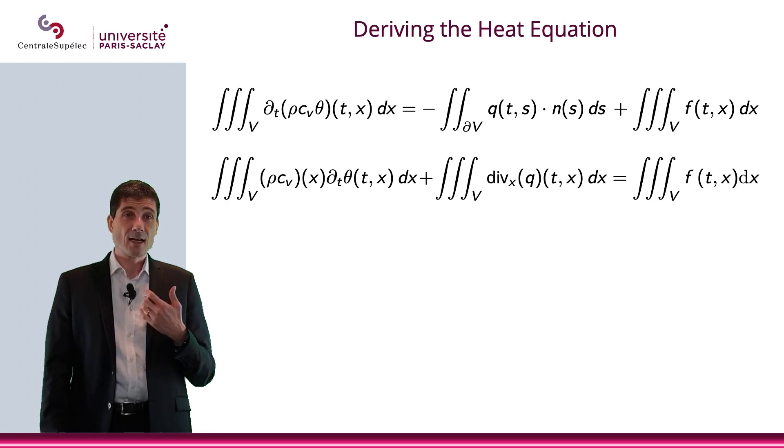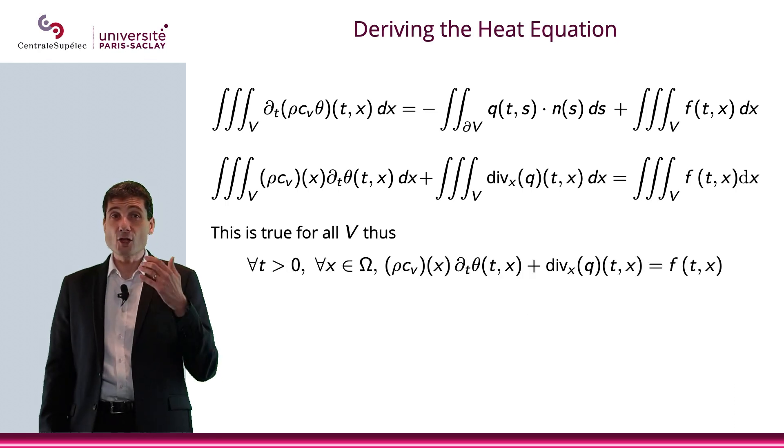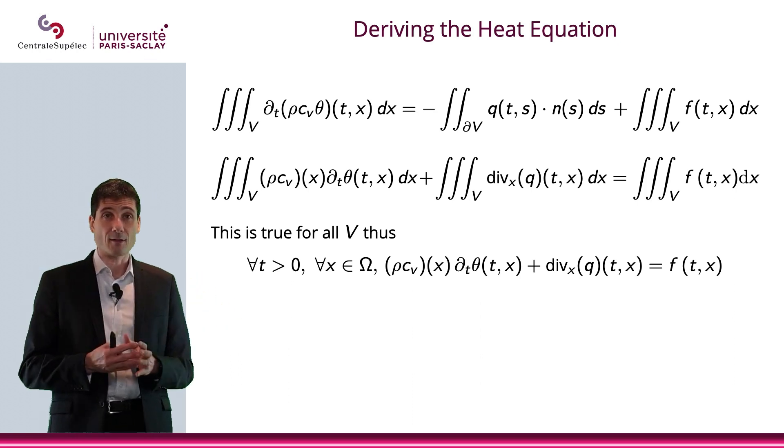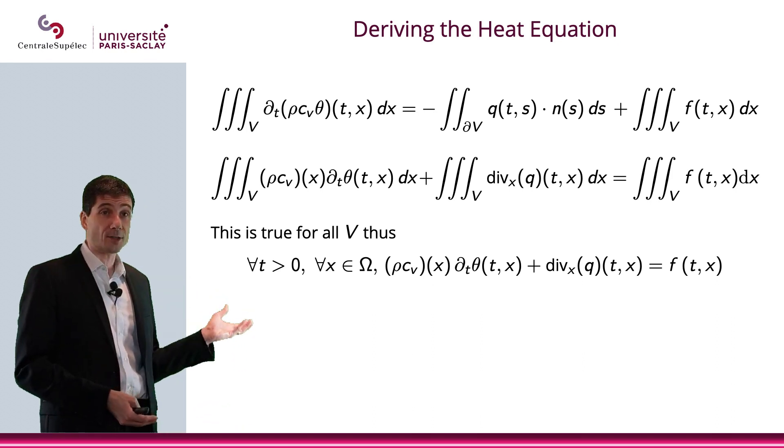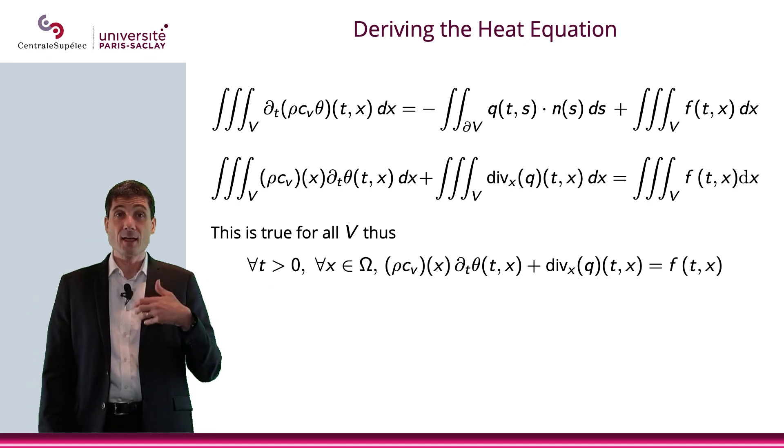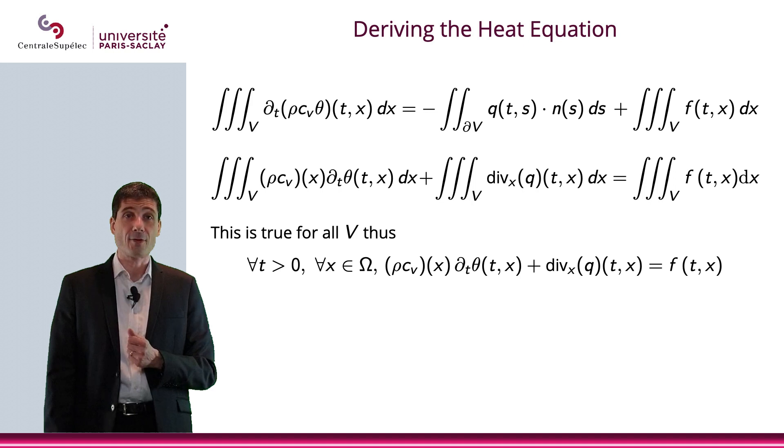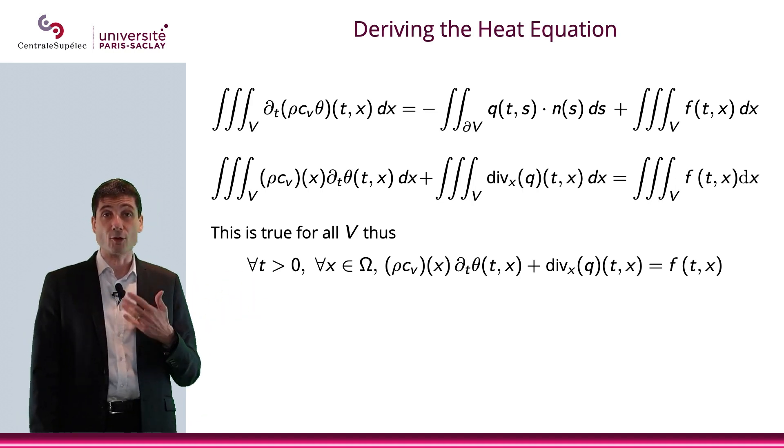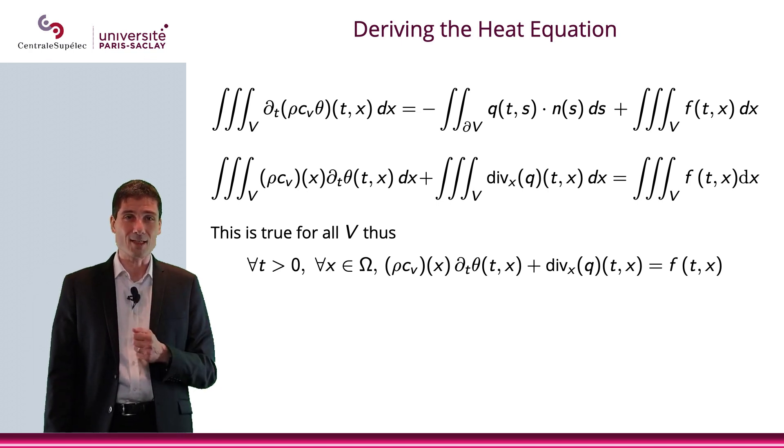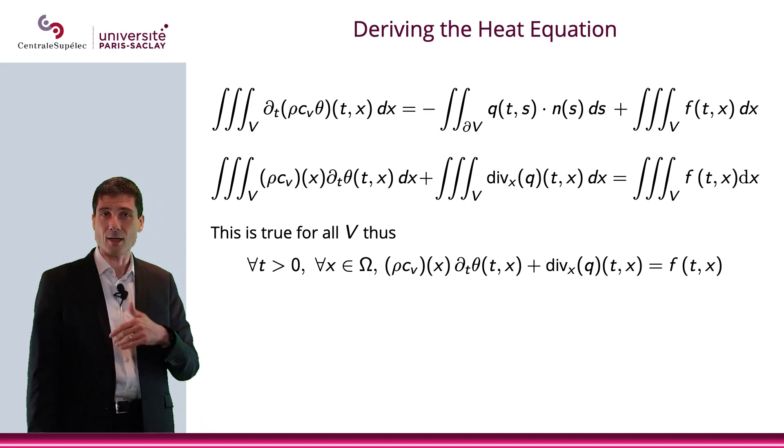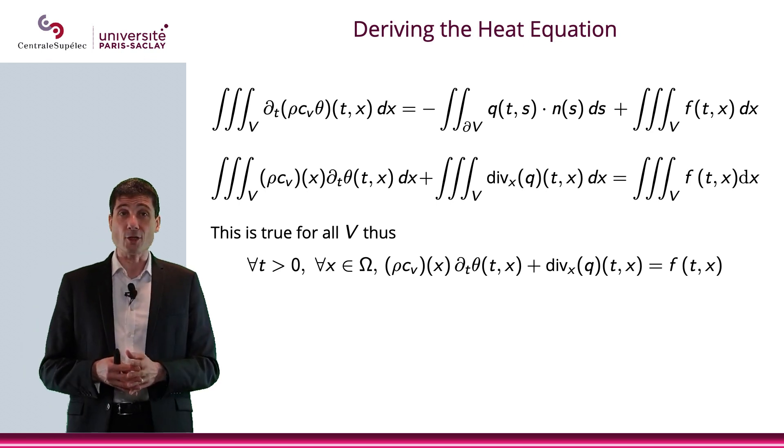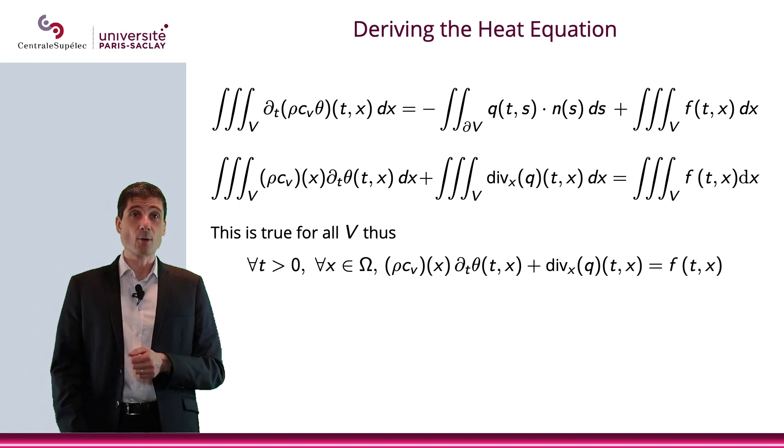Now this is true for all V. So if it's true for all V, the only possibility is that when you put everything on one side, for all t and for all x, then ρCv(x) time derivative of θ plus the divergence of q is equal to f. And I suppose that ρ is independent of time, and so is the same thing for Cv just to simplify again. So we have this equation. It's almost a PDE, but not yet, not completely, because we still have two unknowns, θ and q.